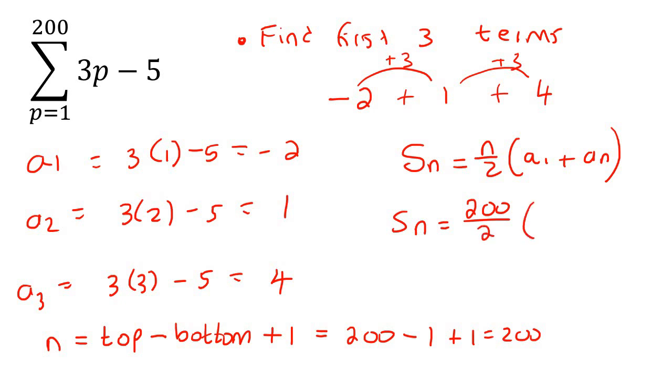So, we know that there's 200 terms. A1 is term number 1, which is negative 2. Ah, we don't know what the last term is. But that's okay, because we can work that out by just finding the 200th term. And so, we can just go say 3 times 200, take away 5, which is 595.